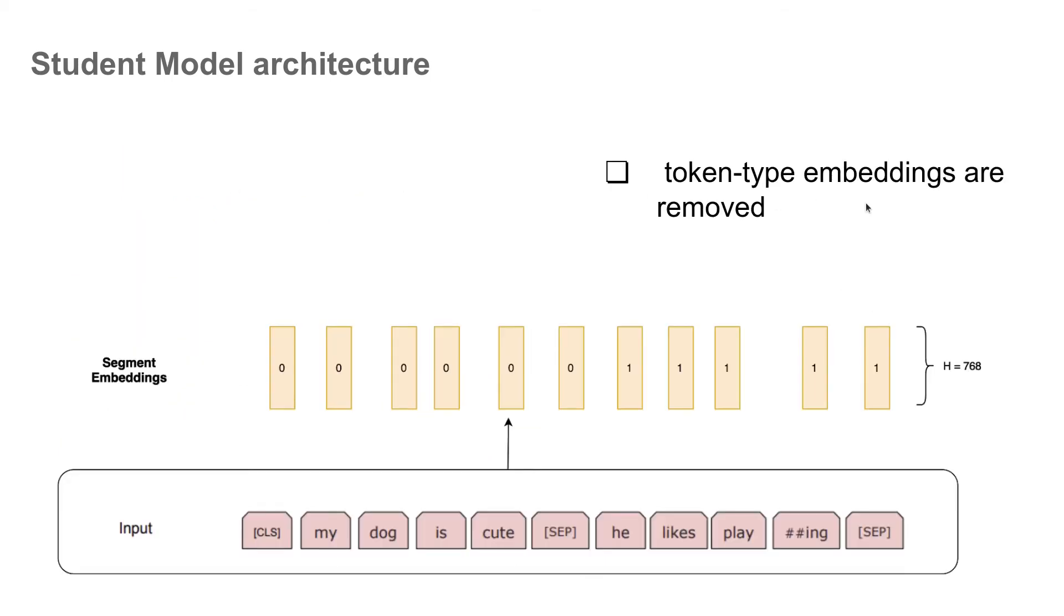Then they also remove the token type embeddings. What are token type embeddings? In BERT, as input we can represent two sentences in the same input sequence. This is mainly used for training tasks like sentence similarity. The two sentences are separated by a special token called SEP. And in addition to this, we also provide segment IDs. Segment IDs are a sequence of zeros followed by ones corresponding to each token. Zeros tell that these tokens belong to one sentence, and ones tell that these tokens belong to another sentence. That's all. So what we're saying is, in the student model architecture this embedding was also removed.